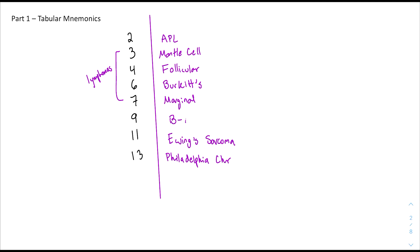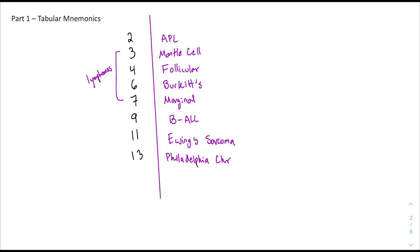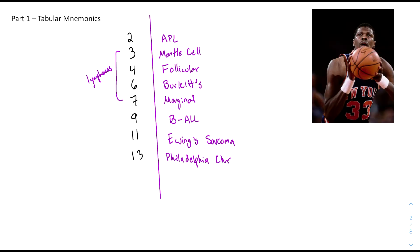To bring it back to nine, it's going to be B-ALL. One way to remember is to lengthen the sentence: 'a man frolic to Burma to ball,' as in to play basketball. Also, First Aid uses Patrick Ewing, the basketball player, because his jersey number was 33, and the translocation for Ewing's is T(11;22), which sums to 33. Similarly, you can think of B-ALL in association with Patrick Ewing — ball right before Ewing's sarcoma.